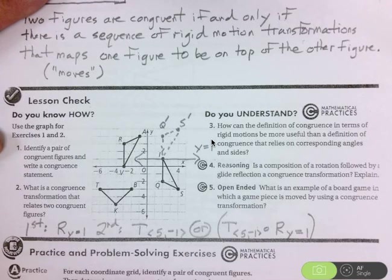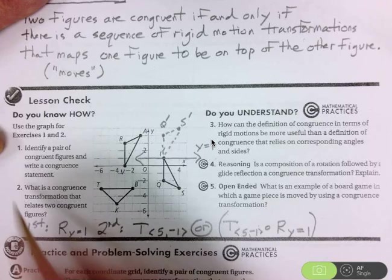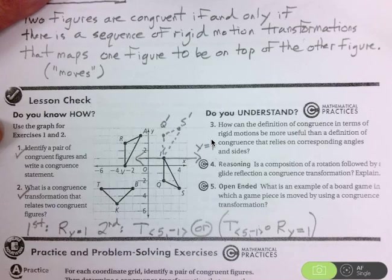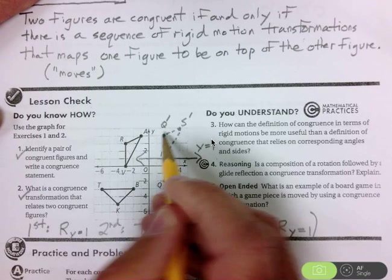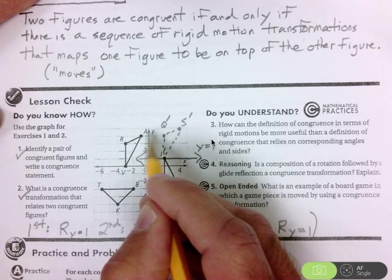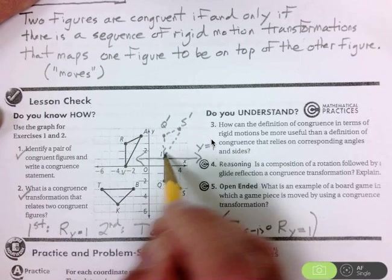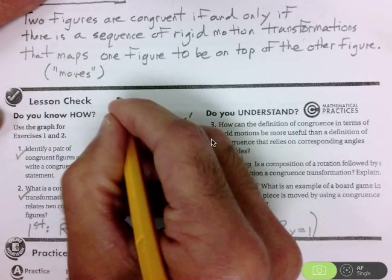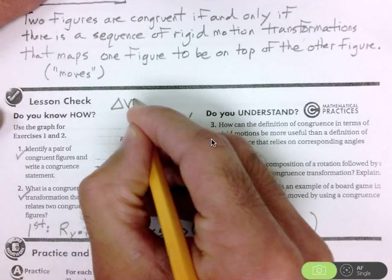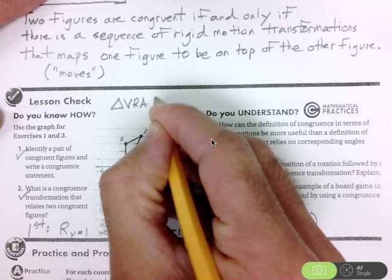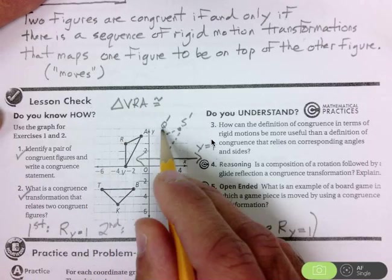And now notice that's your answer to question number 2. Now look how easy it is to answer question number 1. We can write a congruence statement. So R corresponds to Q, A corresponds to S, V corresponds to I. So I know that triangle VRA corresponds to triangle IQS.